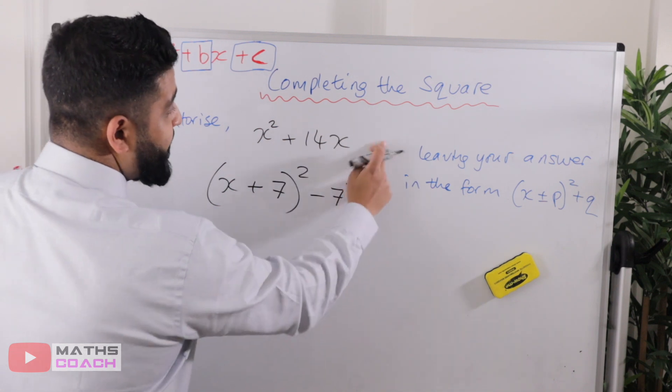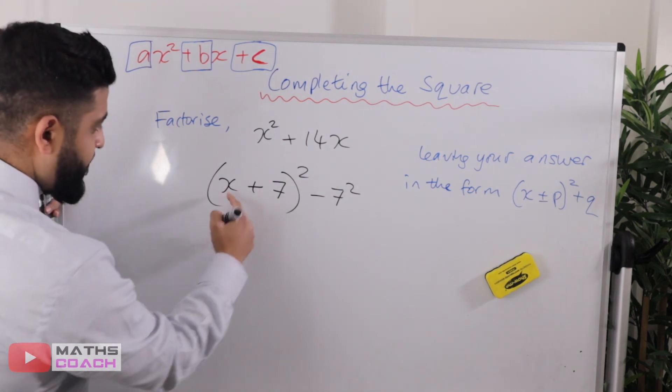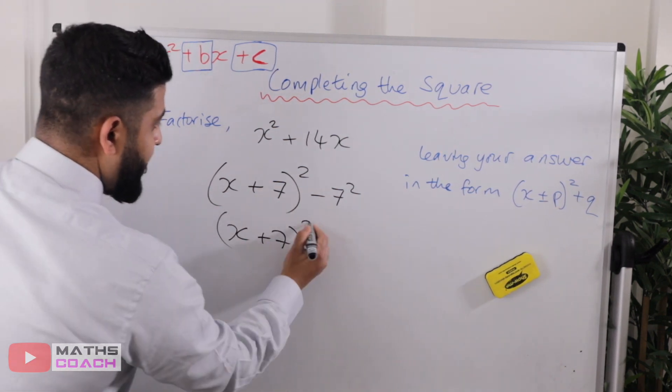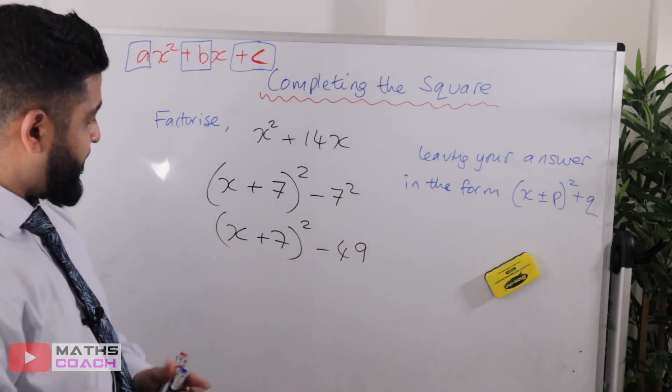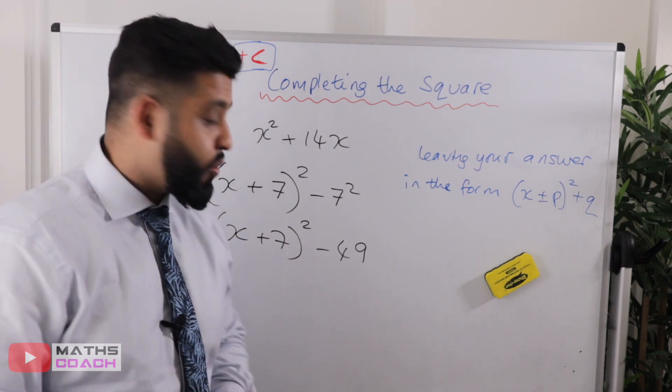Now, unlike the previous example, there's nothing else here. So I won't add anything here. So let's do this. We just need to tidy up. So we have minus forty-nine. And this has now been factorized using completing the square.